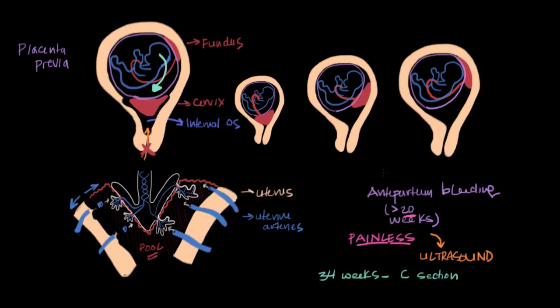And another pretty big risk factor is multiple gestation. So women who have twins, or triplets, or quadruplets, or more babies, because each of these babies has its own placenta. And you can imagine that the higher the number of placentas, the greater the chances of having one fall into this area, right? So it's simply a probability game.